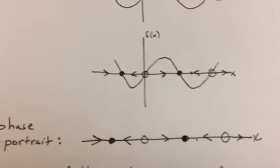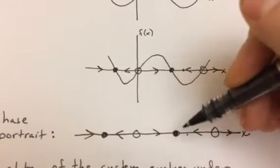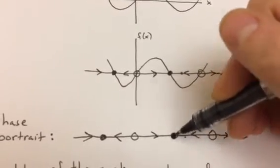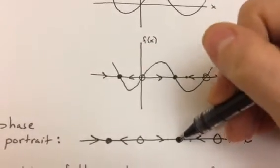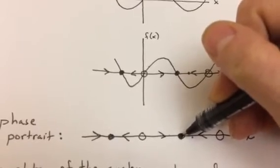A phase portrait of this system is specifically this line with these arrows and these filled and open dots. And this is giving us the information that if I were to start at this point, I know how the state of the system is going to evolve in time, it's going to approach this point. And if I were to start right at this point, well, that's an equilibrium solution, so I'll stay at that point for all time.